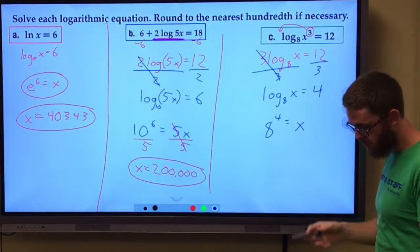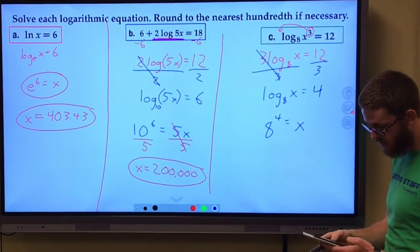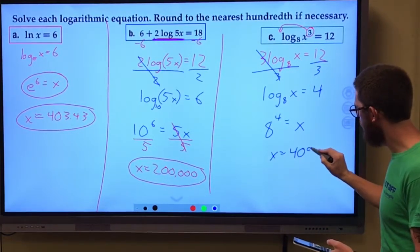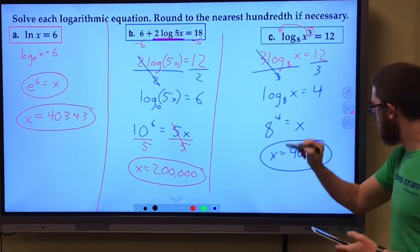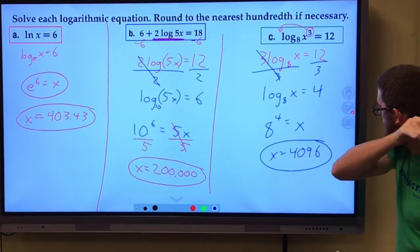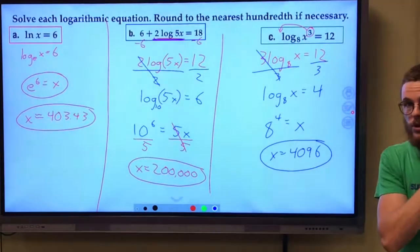And so 8^4 = x. Eight to the fourth power is 4096. Then you can always double check yourself. We can plug that in. You should be feeling pretty good about that.